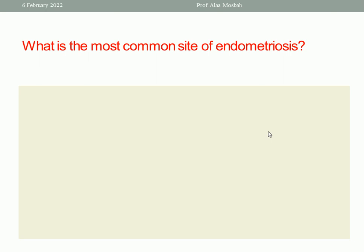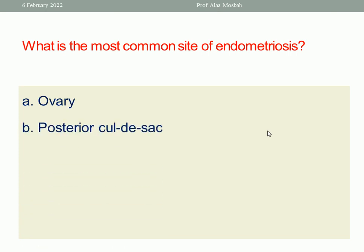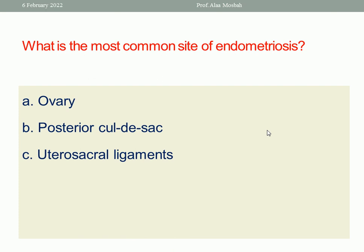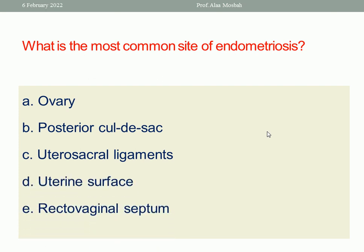Next question: what is the most common site of endometriosis? Options: the ovary, posterior cul-de-sac or Pouch of Douglas, uterosacral ligaments, uterine surface, or rectovaginal septum? Of course, endometriosis is most common in the ovary. This is the best one-response answer.